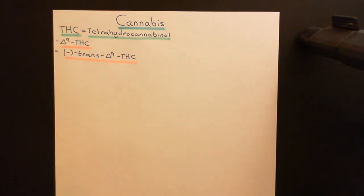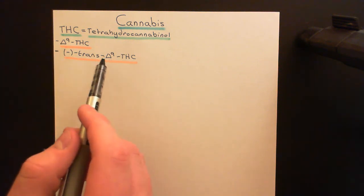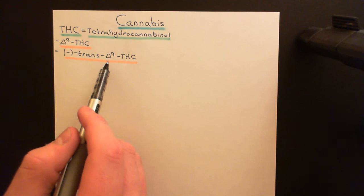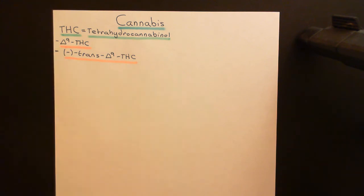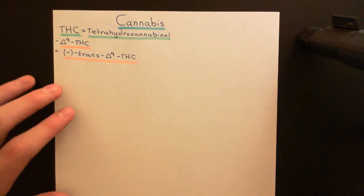What I now want to do is explain all the different parts of this name — what is meant by the delta-9, and then what is meant by the negative trans. The delta-9 tells you where a double bond is in the structure of tetrahydrocannabinol. The negative trans delta-9 tetrahydrocannabinol tells you the specific optical isomer of delta-9 tetrahydrocannabinol that is the active ingredient in cannabis.